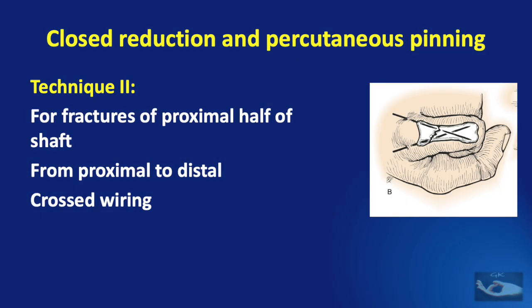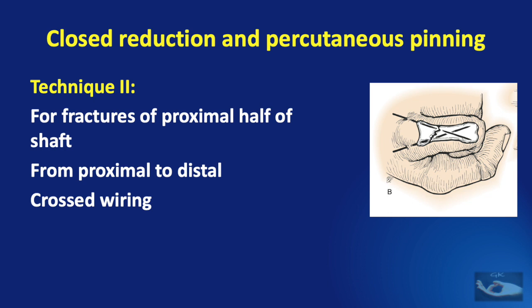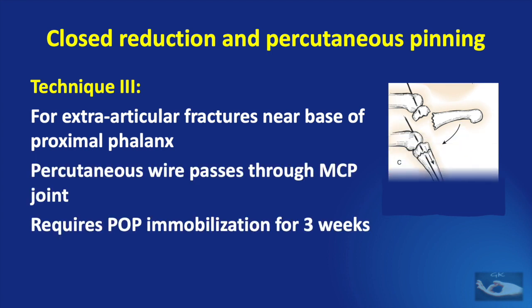The second technique is used for percutaneous pinning of fractures of the proximal half of the shaft, where wires are passed from proximal to distal and crossed wiring can also be done. For extra-articular fractures near the base of the proximal phalanx, a third technique can be used where the percutaneous wire passes through the metacarpophalangeal joint and then into the distal segment. This technique requires a POP immobilization for three weeks.